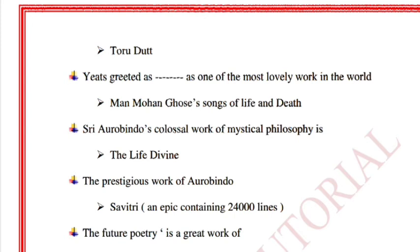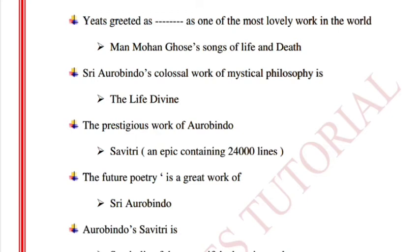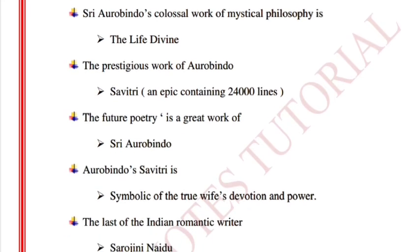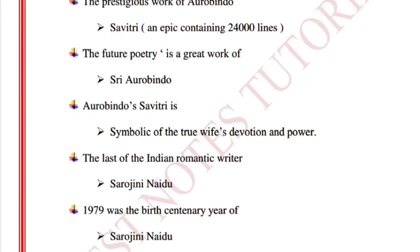Manmohan Ghosh's 'Songs of Life and Death.' Sri Aurobindo's colossal work of mystical philosophy is 'The Life Divine.' The prestigious epic work of Aurobindo is 'Savitri,' containing 24,000 lines. 'Savitri' is symbolic of the true wife's devotion and power.